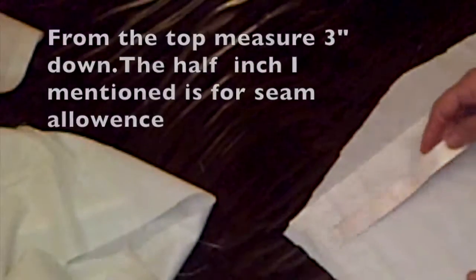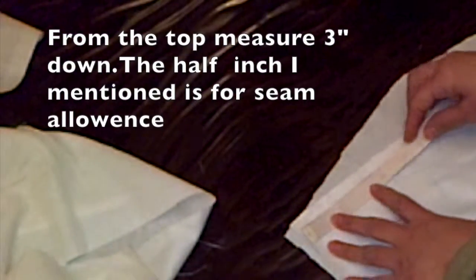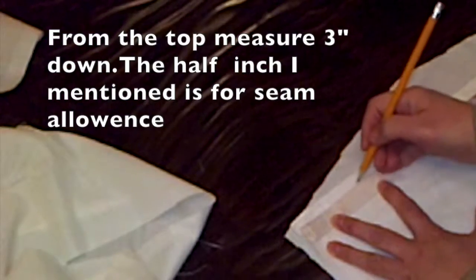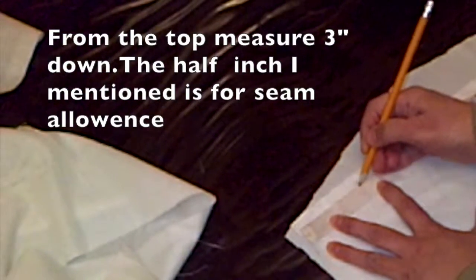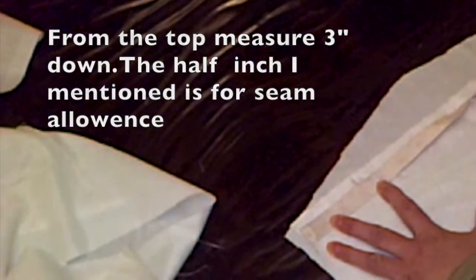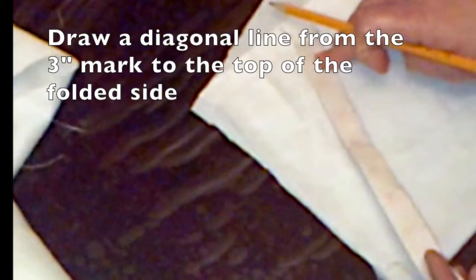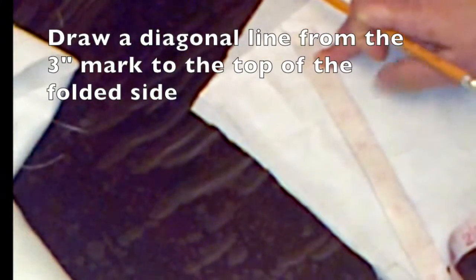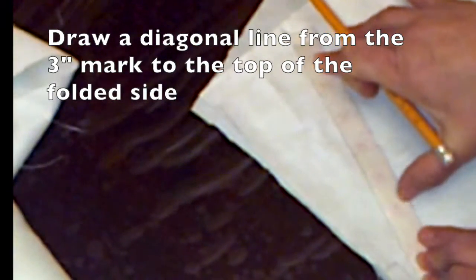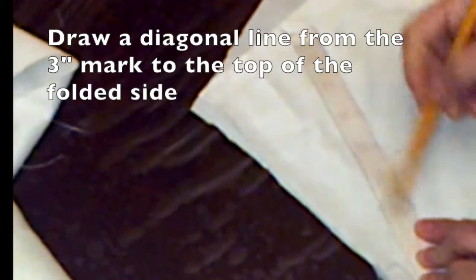Now separate this sleeve and separate both sleeves from each other. From the open side of the sleeve, come down three and a half inches and mark it. Then draw a diagonal line towards the folded side of the sleeve, starting from the folded side to that mark we just made.